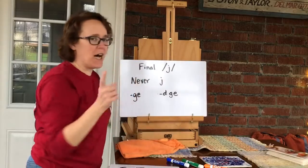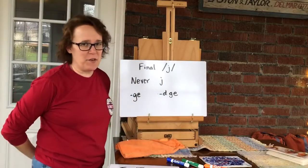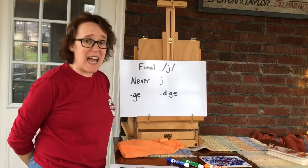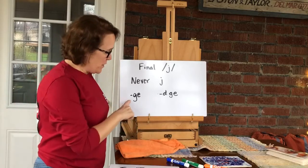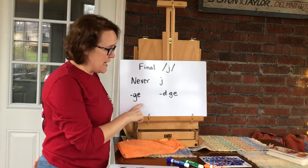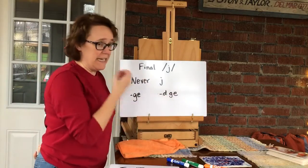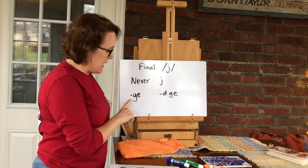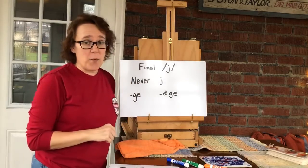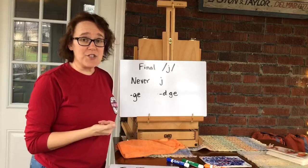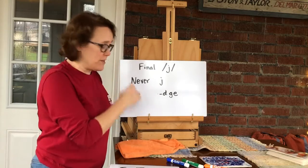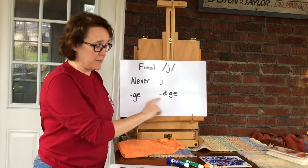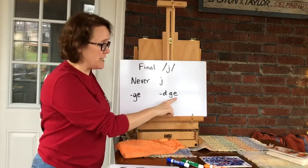Funny thing about J at the end of a word is that it's never spelled with a J. It's either spelled with a G-E or a D-G-E. Now you have to remember that G in front of an E, I, or Y says J. And so we use that G-E to spell the J sound sometimes, and sometimes we use D-G-E.